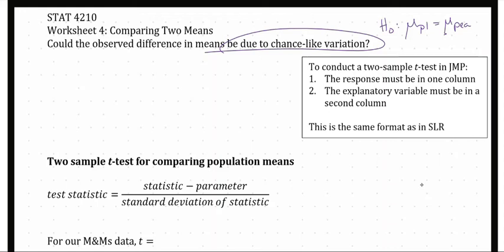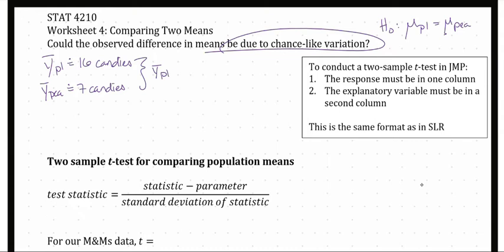To recap, we did an in-class activity where we collected data from plain and peanut fun-sized packs of M&Ms, and we asked ourselves the question: could the observed difference in means be due to chance-like variability? We observed an approximate mean for the plain packs of Ȳ-plain ≈ 16 candies, and an approximate mean for the peanut packs of Ȳ-peanut ≈ 7 candies. That was true for all three classes. The observed difference in means, Ȳ-plain minus Ȳ-peanut, is approximately 9 candies. We also could have done it as Ȳ-peanut minus Ȳ-plain, which is approximately negative 9 candies.